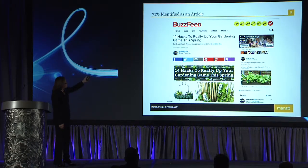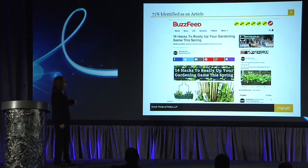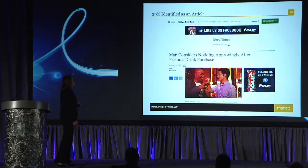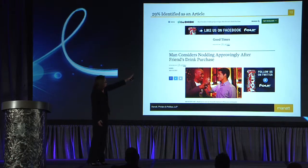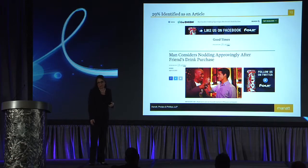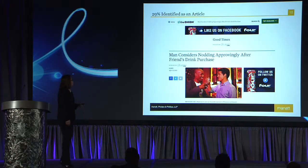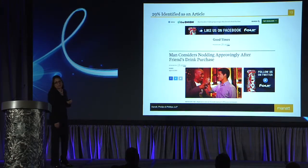Another example on BuzzFeed featured the Miracle-Gro name and logo all around, but it was an article about ways to improve your gardening this spring. 71% identified it as an article and less than 30% knew it was an ad. The only one that did well in the survey was content sponsored by Loco — it had 'presented by' at the top and the product immediately to the left of the article. That made a difference: only 29% identified it as an article, meaning over 70% understood it was an ad.